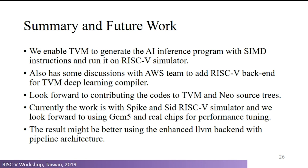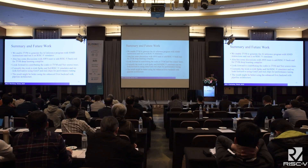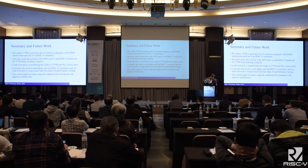In summary, we enabled TVM to generate AI inference programs with SIMD instructions running on a RISC-V simulator. We have also had discussions with the Amazon Web Services team to add a RISC-V backend for the TVM deep learning compiler, and we are looking forward to contributing the code to TVM and open source. We are currently working with the Spike and ANDES RISC-V simulators, and also looking forward to using the GEM5 simulator and real chips for performance tuning. We believe results could improve further with an enhanced LLVM backend that incorporates pipeline architecture information.